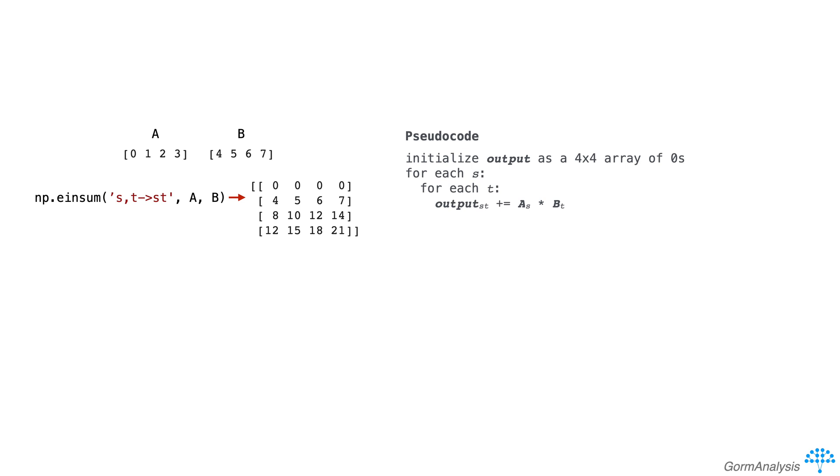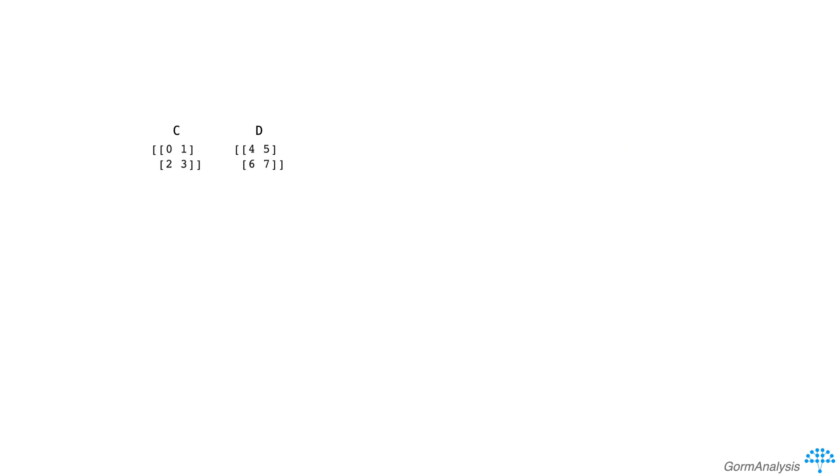EinSum really starts to shine in two dimensions. Let's make 2x2 arrays c and d. If we do an einsum like 'ij,ji->', we get back 37. Before we write out the pseudocode for this one, let's dissect the subscript string and what it tells us.